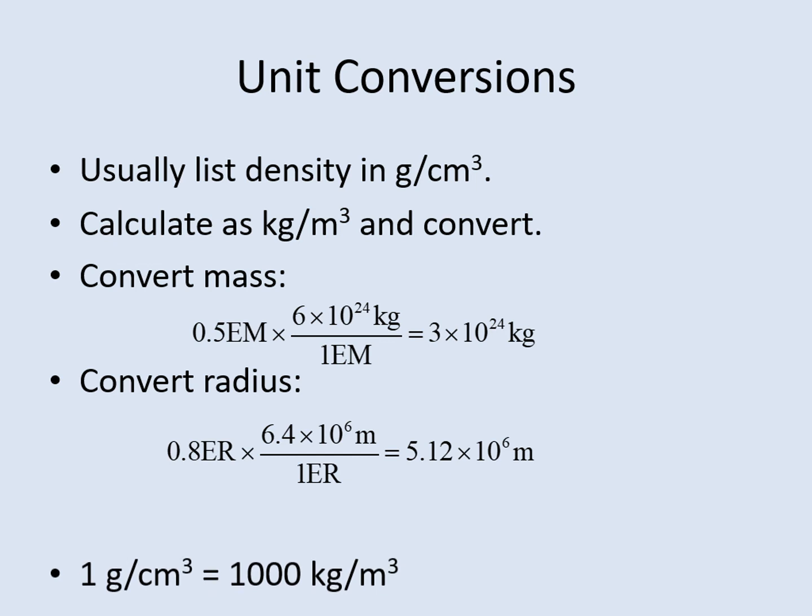When we get to the end of the problem, we'll need to convert the answer to grams per cubic centimeter. So let's write that conversion down here. 1 gram per cubic centimeter equals 1,000 kilograms per cubic meter. So when we finish the calculation, we'll need to multiply by 1 gram per cubic centimeter divided by 1,000 kilograms per cubic meter to get the answer in the right units.